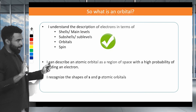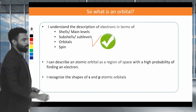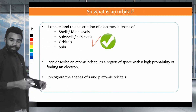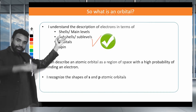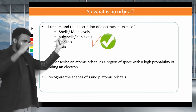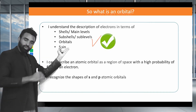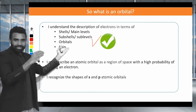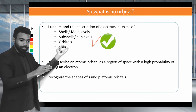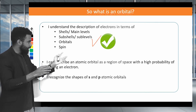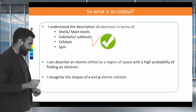We can now describe an electron in terms of its main level (1, 2, 3, 4), its sublevel (S, P, D, F), its orbital (X, Y, Z for P orbitals), and finally its spin — which is either up or down.